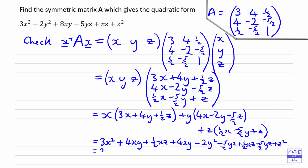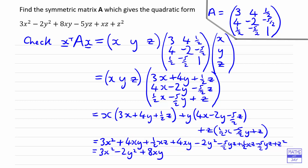Collecting terms: we have 3x² and minus 2y². For the xy term, we've got 4xy and another 4xy, giving plus 8xy. For yz, we've got two lots of minus (5/2)yz, giving minus 5yz. For xz, a half plus another half gives xz. And finally z². So we have checked and shown that our answer is correct.